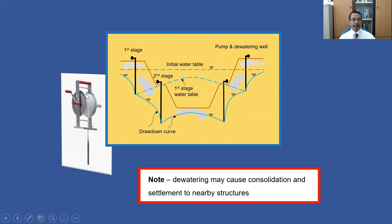This picture shows a device to measure the location of the ground water table called a dip meter. It is a measuring tape connected to a sensor device; whenever it touches water, it will beep. So in a borehole, when the device is lowered and touches water, it beeps, and we can read from the measuring tape the depth of the ground water table with respect to the ground surface.